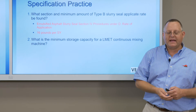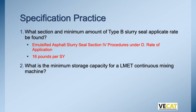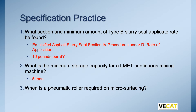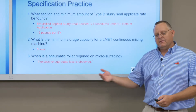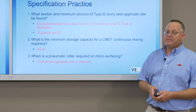What's the minimum storage capacity? If you open up the special provision for latex modified emulsion treatment, you'll see that it's five tons — so that piece of equipment has to hold at least five tons of material. When do we require a pneumatic tire roller on microsurfacing? It says right in the language: if excess aggregate loss is observed. This is a visual inspection by both the inspector and the contractor.